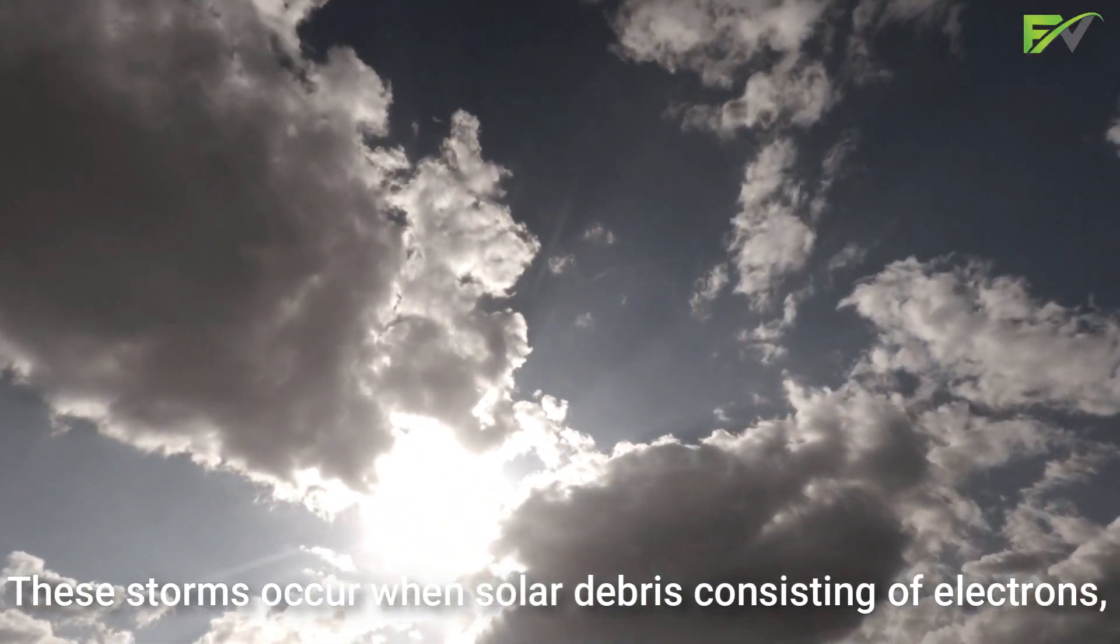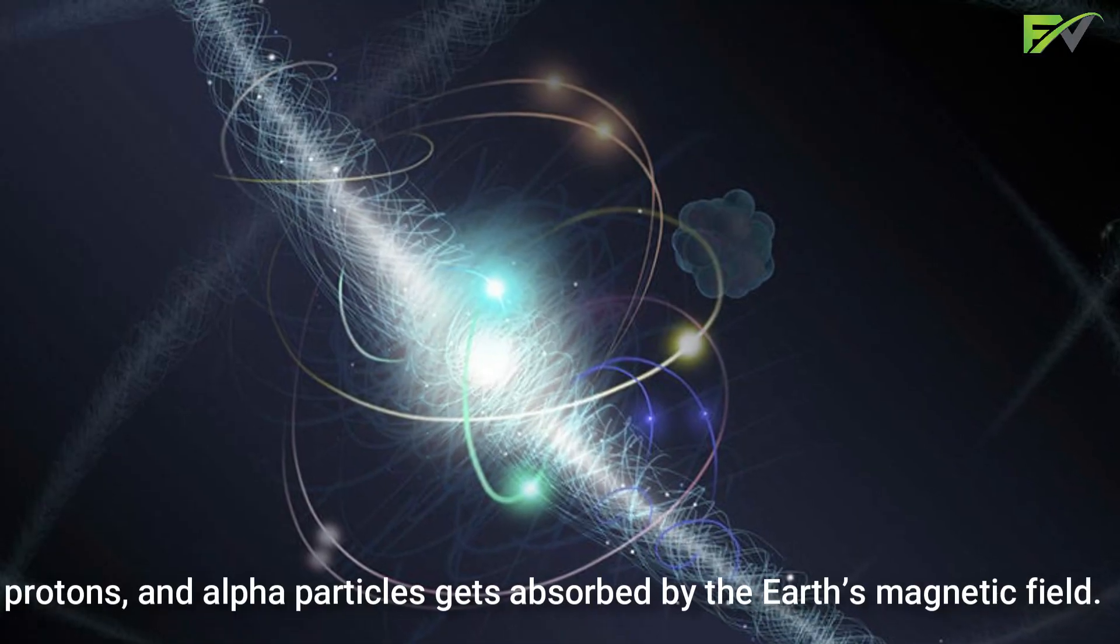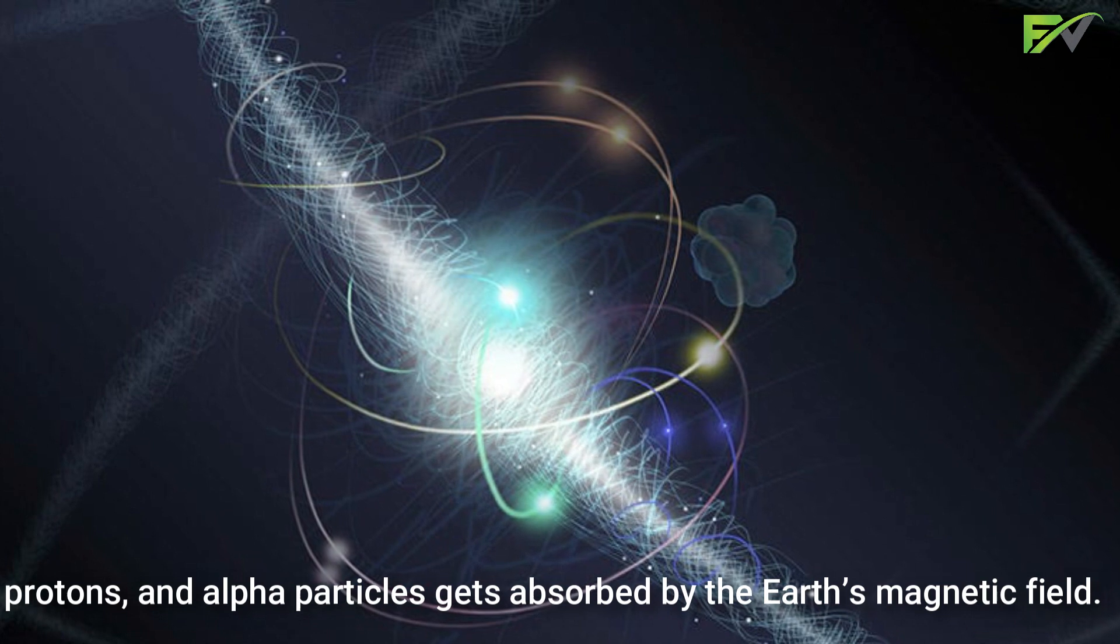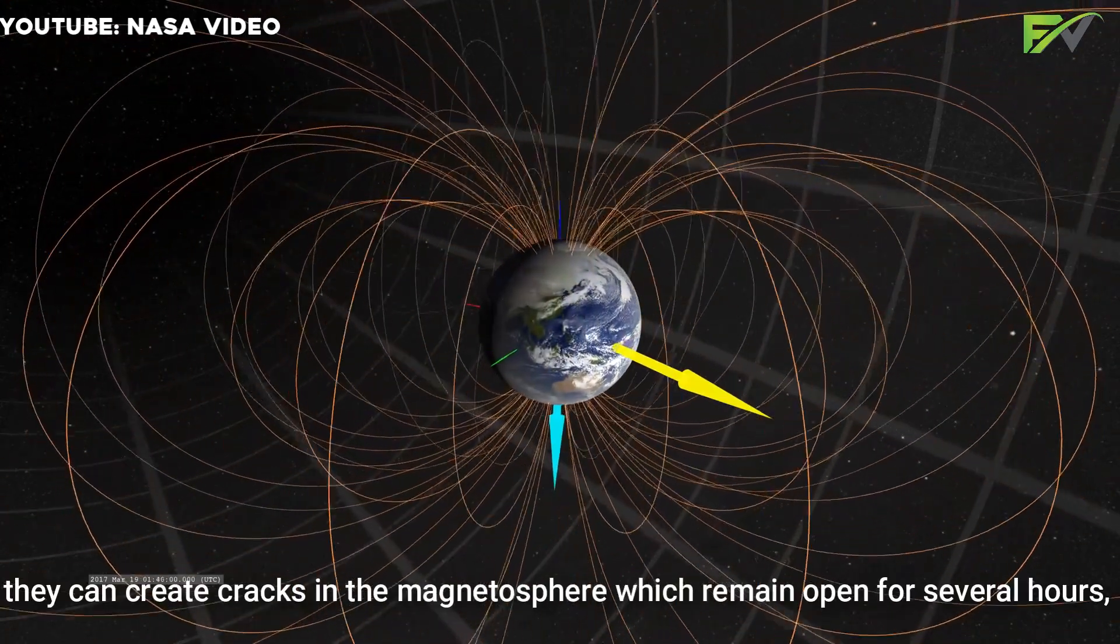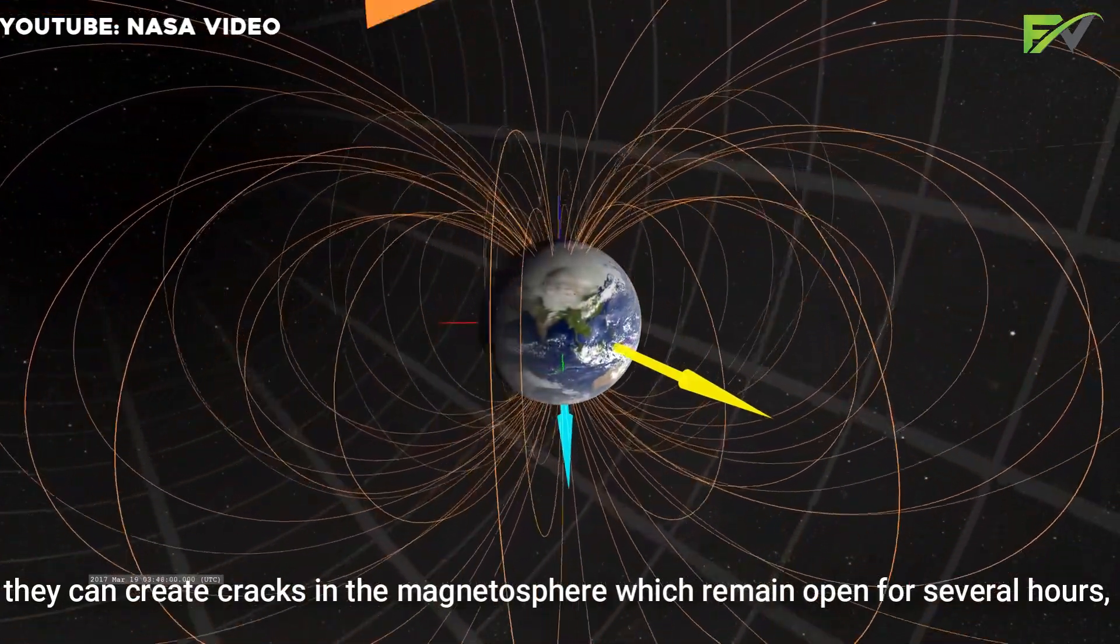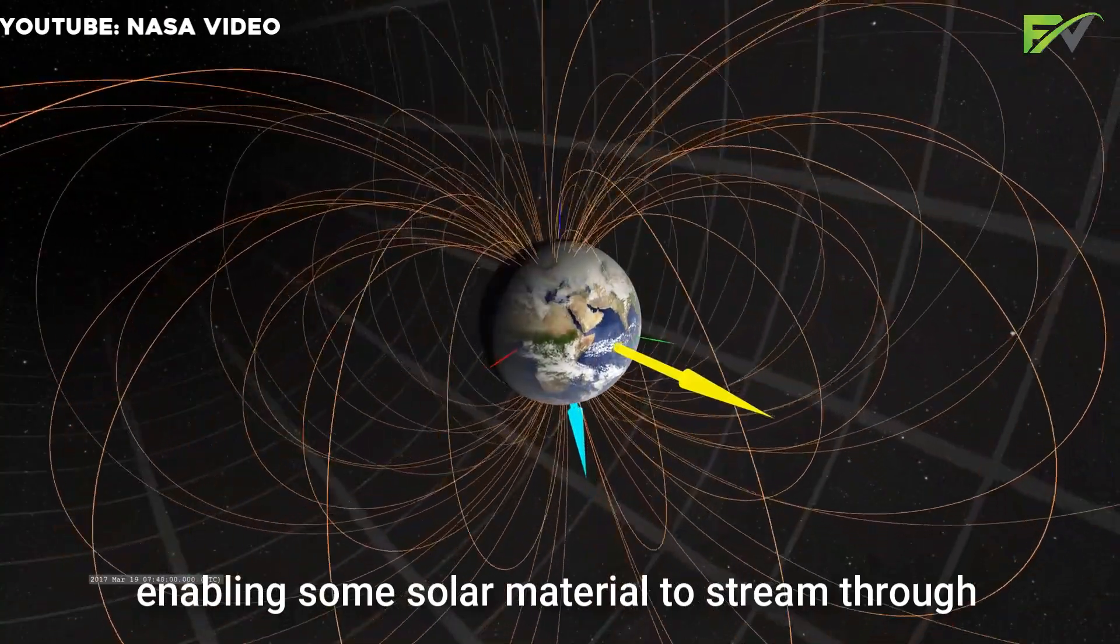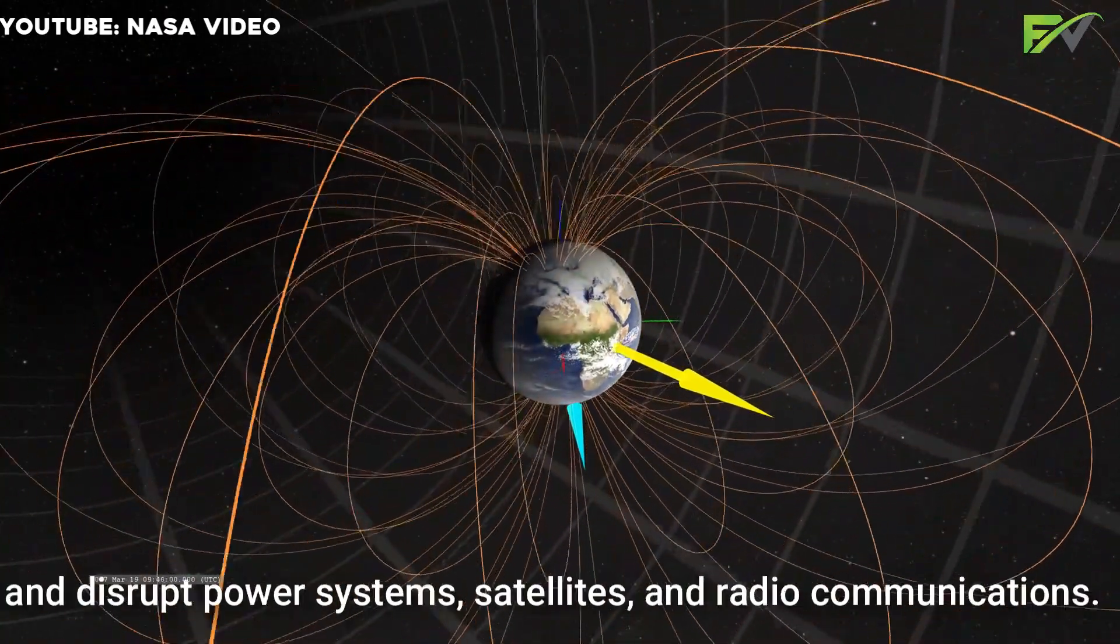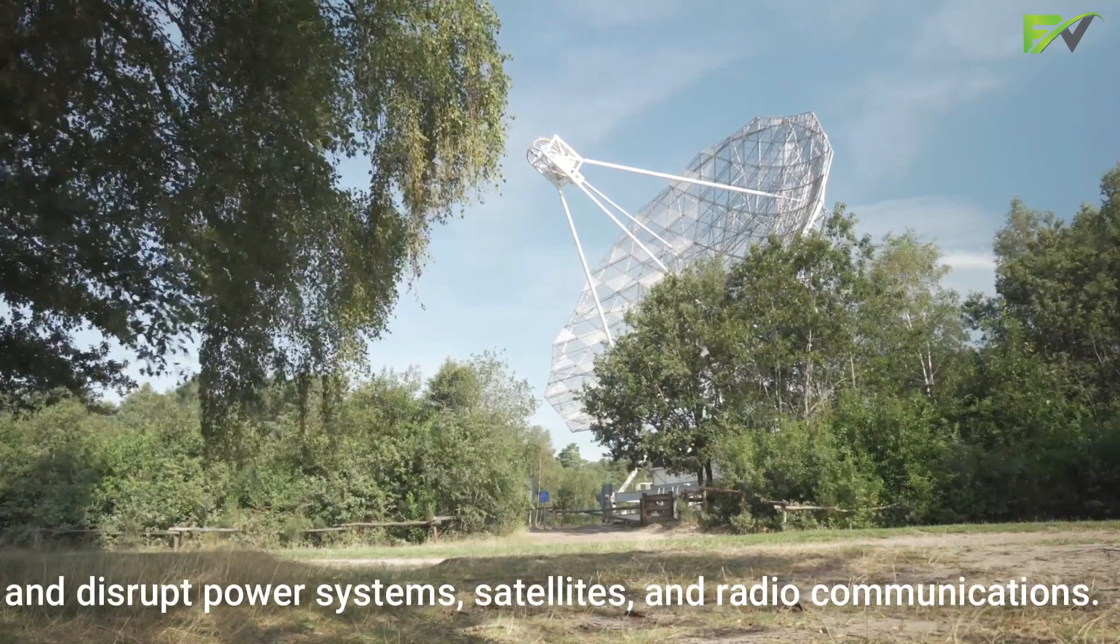These storms occur when solar debris consisting of electrons, protons and alpha particles gets absorbed by the Earth's magnetic field. If they are strong enough, they can create cracks in the magnetosphere which remain open for several hours, enabling some solar material to stream through and disrupt power systems, satellites and radio communications.